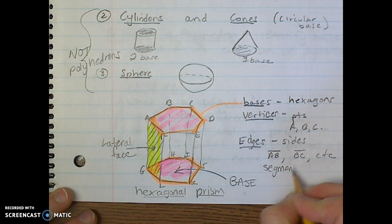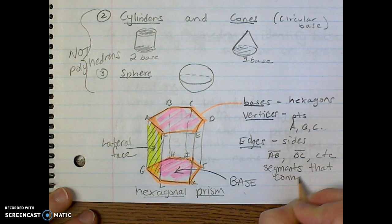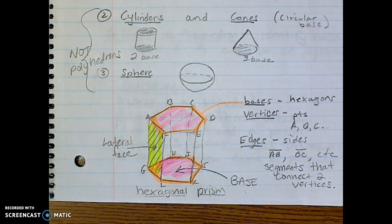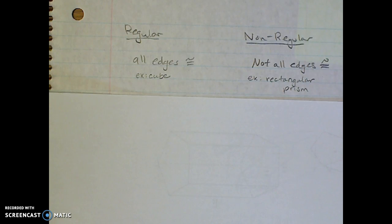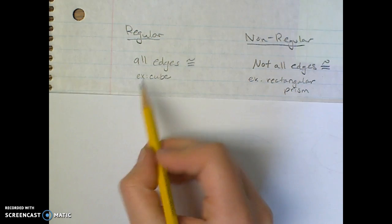Just to refresh our memory about a couple more vocab words: regular versus not regular. Remember, whenever you have a regular shape or figure, that means that all sides are congruent, and so you would need to look for tick marks on every single edge in order for a 3D shape to be regular.